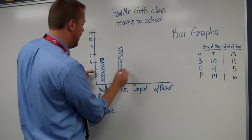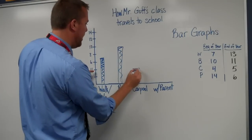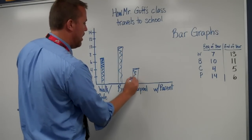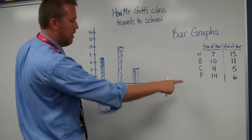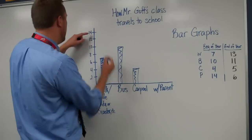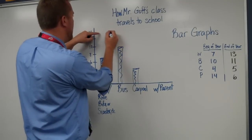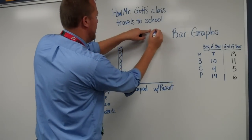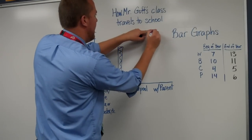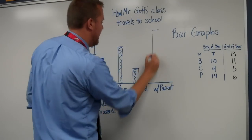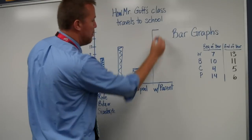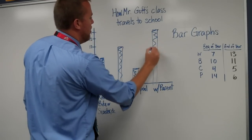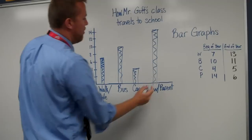Carpooling — we just had 4 at the beginning of the year. And then riding with the parents, we had 14. So I'd come up here, and above where it says 'with parent,' I would draw my bar graph.